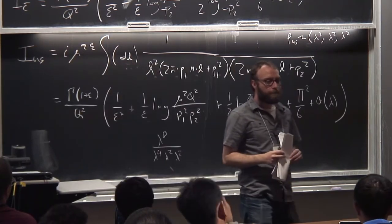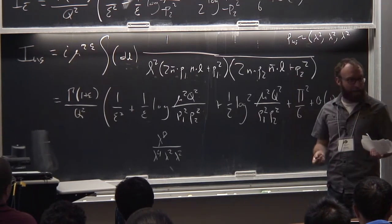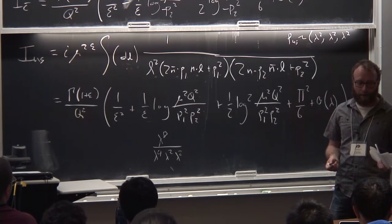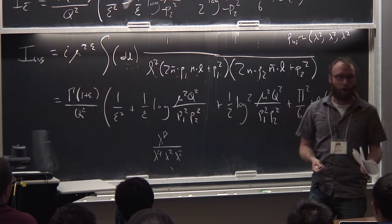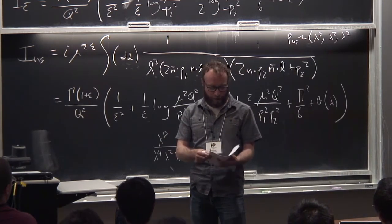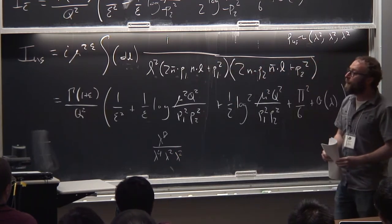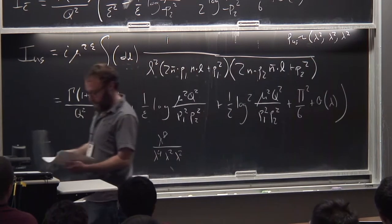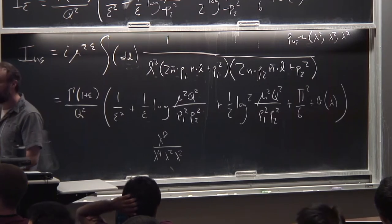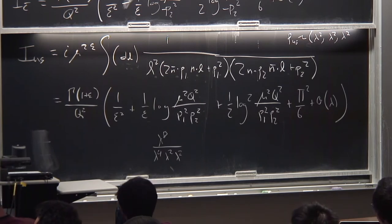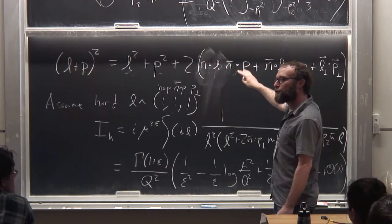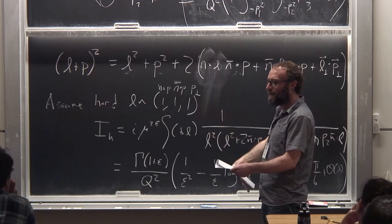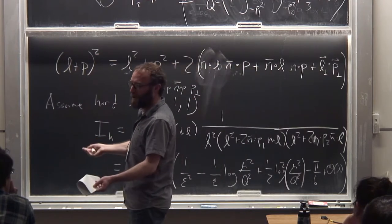A student asks: do you ever get lambda to a negative power? Yes—it turns out that at least in the example of Wino annihilation, negative powers contribute to what's called the potential region, which is the avatar of the Sommerfeld effect. A student asks about P1 squared being negative: if P1 squared is about lambda squared and lambda is a ratio of masses, how can it be negative? Don't take lambda literally—when talking about scaling, we're just doing Taylor expansions in a small parameter; positive or negative doesn't matter. P1 squared negative is like a t-channel process.